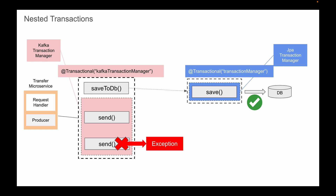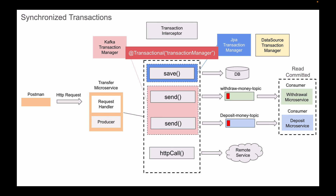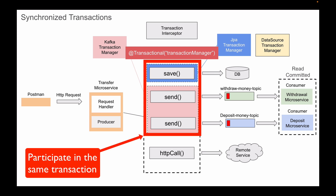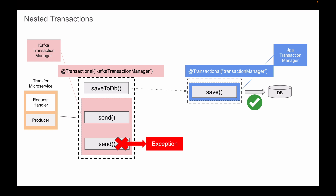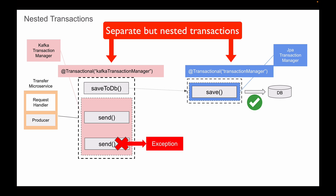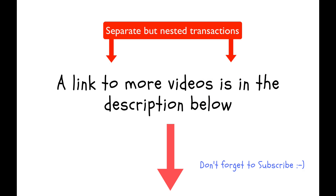So this was briefly about how we can make our application work with Kafka and database transactions. In the following lessons, you will see how both of these transaction approaches work. We will first write code to see how Kafka and database operations participate in the same transaction, and then we will write code to see how Kafka and database transactions work separately.